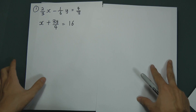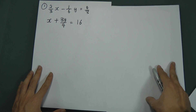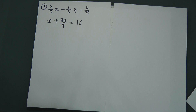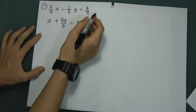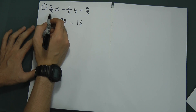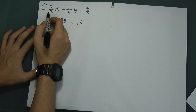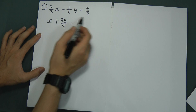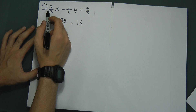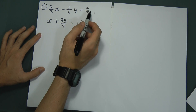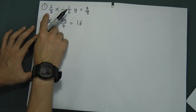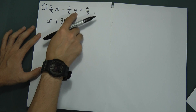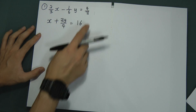Let's go to the first question. We have: 2 over 3x minus 1 over 6y equals 4 over 3. In order to solve this kind of question, you have to analyze the denominator first. The denominators are 3, 6, and 3. In order to make this equation have no fractions, we have to multiply by the common of the denominators. If I multiply 6 for everything, I will have no denominator.